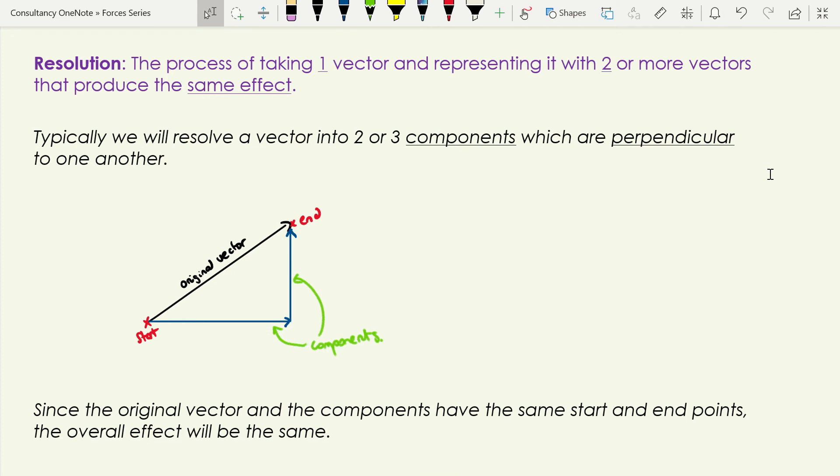So essentially resolution is the opposite of adding vectors. It's the process of taking one vector and representing it with two or more vectors. We're going to do this in 2D, so we're going to take one vector and turn it into 2. If we were doing it in 3D, we would take one vector and turn it into 3 vectors. But the point is that however many vectors we turn it into, they should produce the same effect as the original vector. We can be a bit more specific than that.